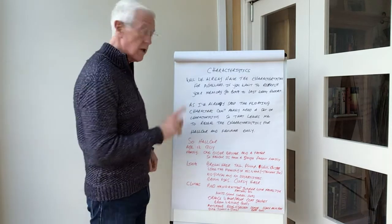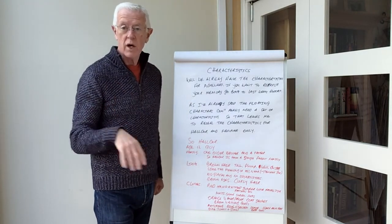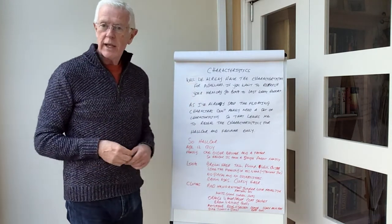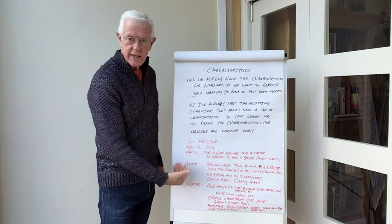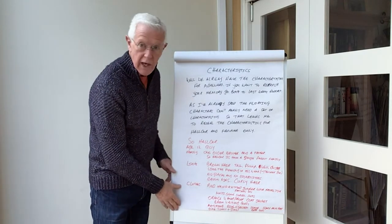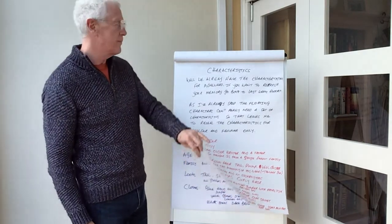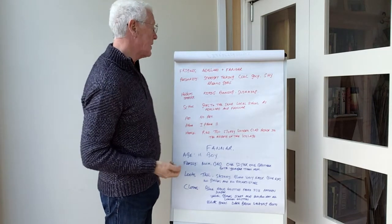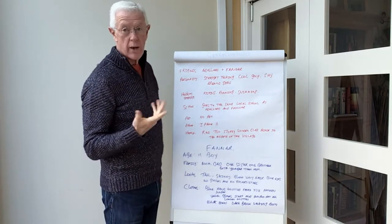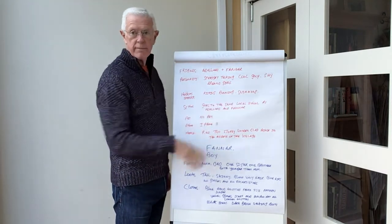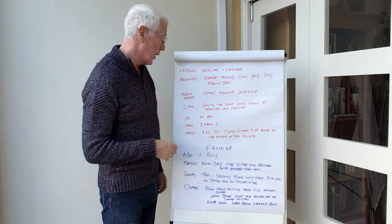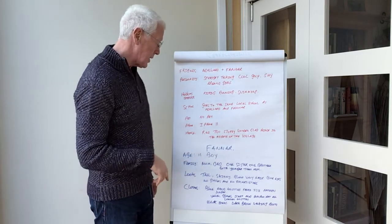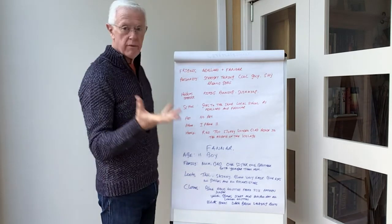The colour of his clothes is important — because if you switch the colours and forget about it, and can't remember what colour scarf or shoes they're wearing, readers are really going to pick it up and it doesn't look very good. So that's why you need to list it down and stick to your character's characteristics. You only have to do this for your main characters and sub-characters. His personality: straight-talking, cool guy, shy around girls. Hobbies: fishing, running, swimming — he's a bit of a sports person. He goes to the same school as Alderwood and Fanna. No pet. iPhone 11. He lives in a red two-storey wooden-clad house in the middle of the village.